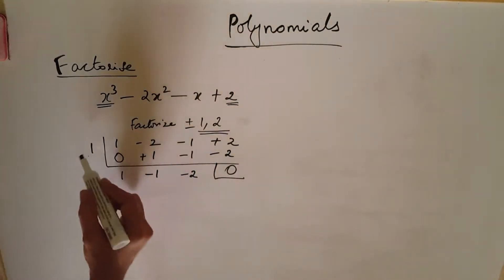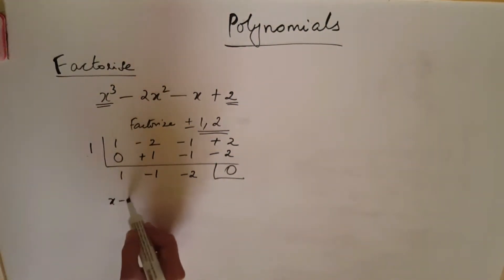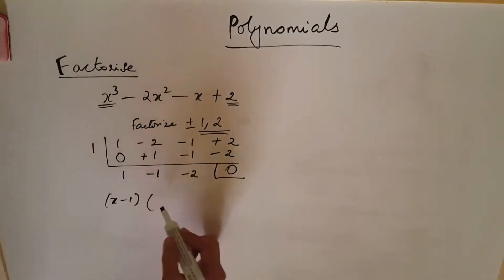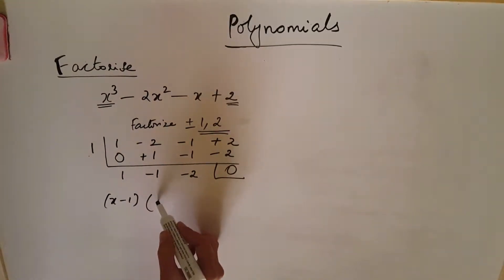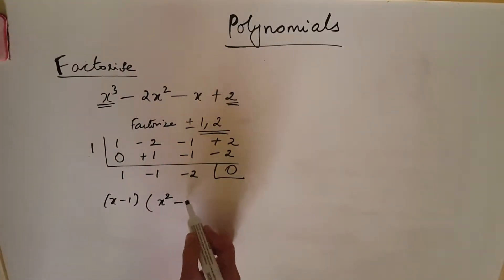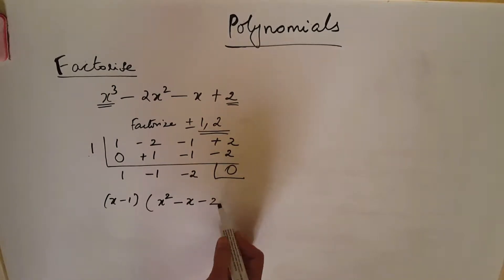Minus 2 into plus 1 gives minus 2, so the remainder is 0. So x = 1 is a root, giving factor x minus 1. We will write the remaining quotient as x squared minus x minus 2.